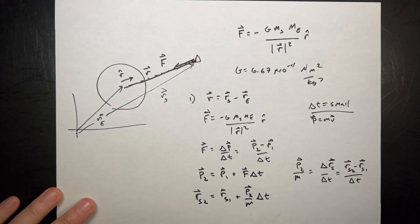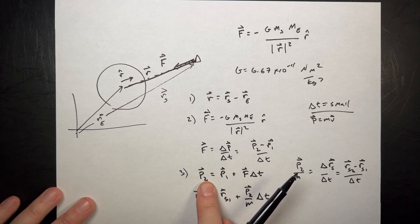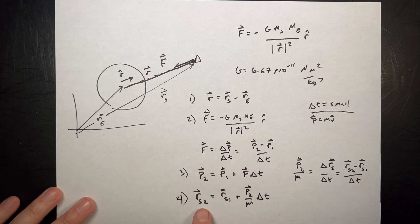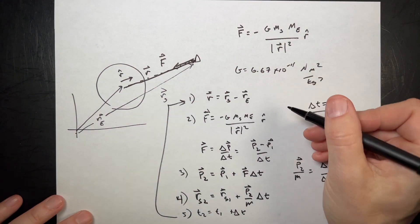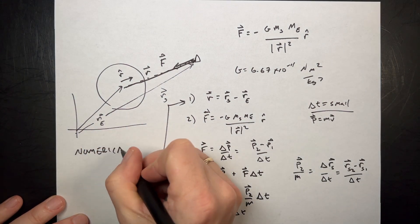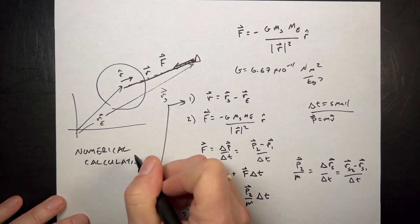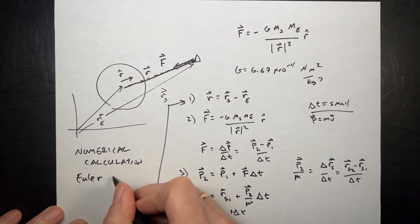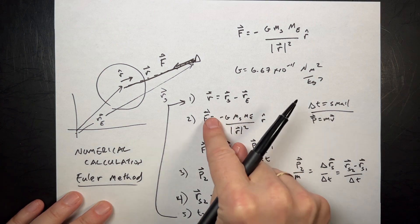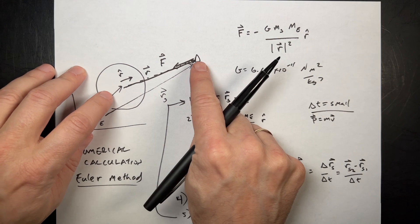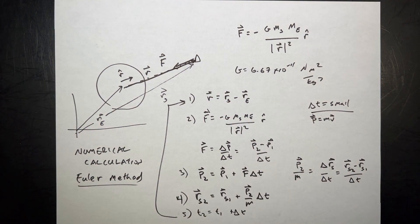We just did some serious magic here. Number one: calculate the vector R. Number two: calculate the force. Number three: use that force and update the momentum at the end of the time interval. Number four: use that momentum we just calculated and update the position. Then update time: T2 equals T1 plus delta T, and come back and do it all again. This is called a numerical calculation — specifically the Euler method. What's great about Python is I can deal with these as vectors and model things in three dimensions.